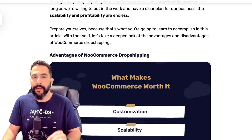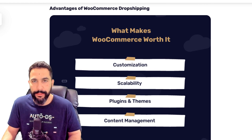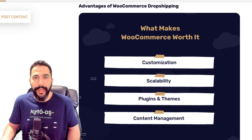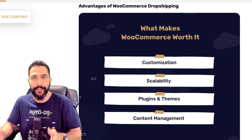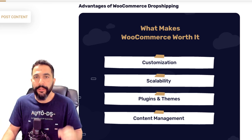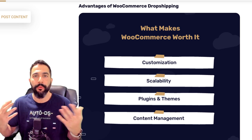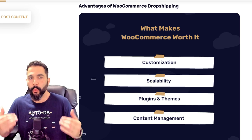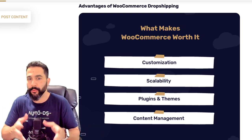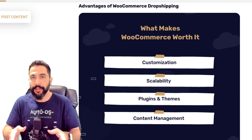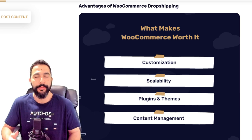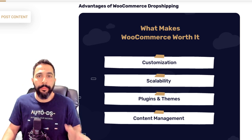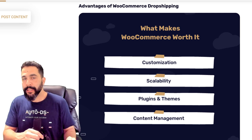Let's go over some advantages of dropshipping on WooCommerce. First, having a website on WooCommerce means we'll have our own domain name — our own www.ourstorename.com — meaning everything is completely customizable. We can do whatever we want with our website. It's not some marketplace like eBay or Facebook Marketplace where we have to follow their rules and policies and don't have a real storefront. Here you actually have a storefront and everything you do with your website is up to you.